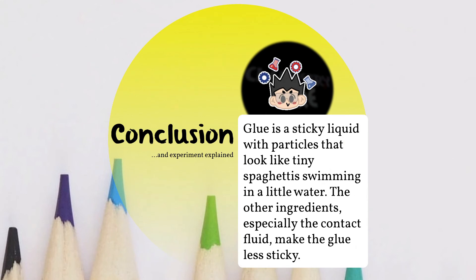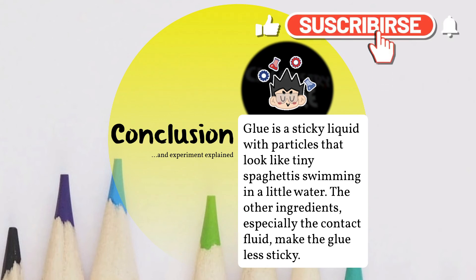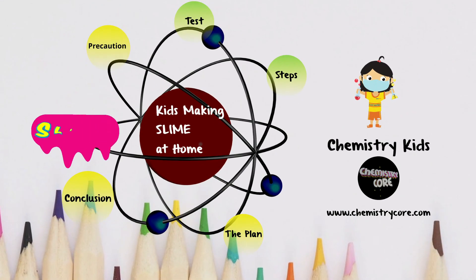So how did this experiment work? Glue is a sticky liquid with particles that look like tiny spaghettis swimming in a little water. The other ingredients, especially the contact fluid, make the glue less sticky. Always find chemistry in everyday life and I'll see you next time.